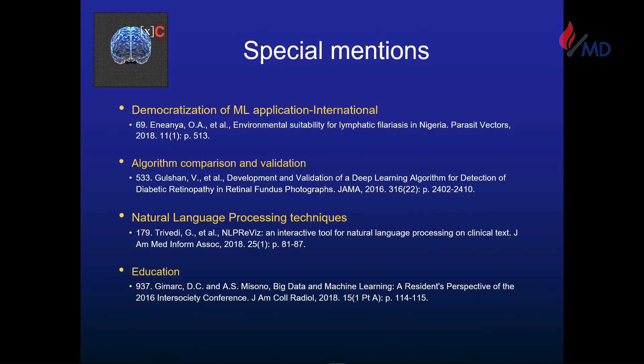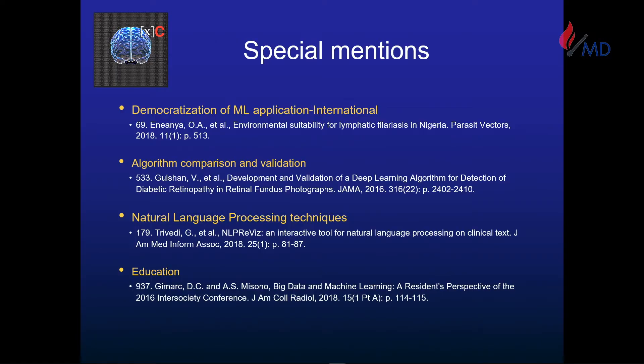The democratization of machine learning is impressive — people in Nigeria are solving local problems using machine learning. Knowledge and skill sets have been democratized; that's the power of ML. People are generating multiple algorithms, doing comparisons and validations. Natural language processing is an evolving field because a lot of healthcare data is in clinical notes and texts — how to extract them and make them meaningful. In education, residents, students, and even high school students are getting involved because of this democratization of skill sets.